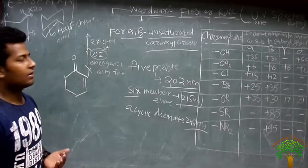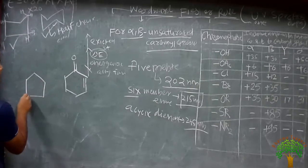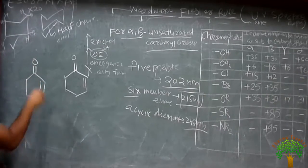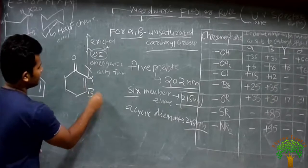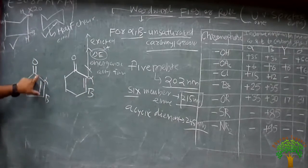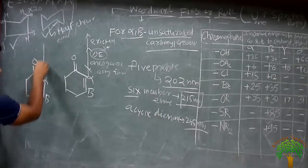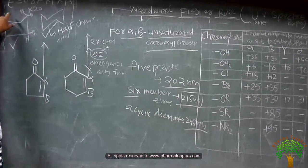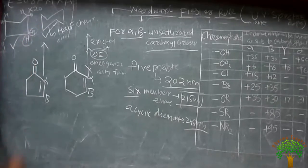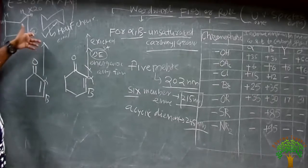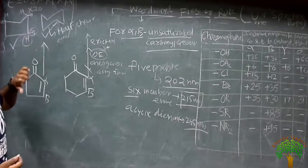When the five-membered ring — this is alpha-beta, because the adjacent carbon is alpha and the next is beta, making it an alpha-beta unsaturated ketone — goes into the excited state, it converts into an eclipsed conformation which has two hydrogens very close to each other. To get into the excited state, it requires more energy, and this is energetically unfavorable.